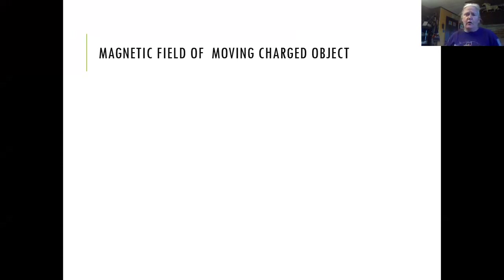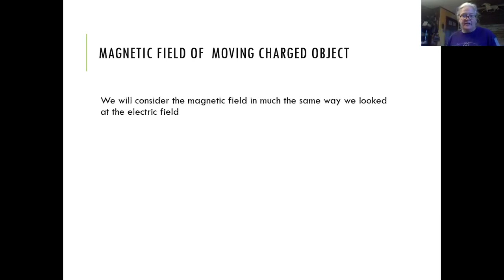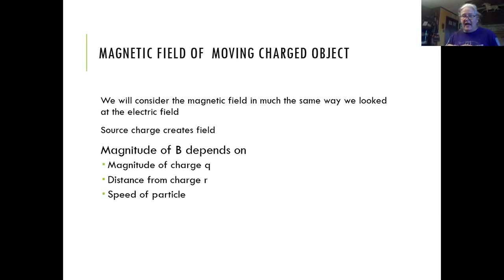We're not going to calculate for an individual moving charge, because that's actually fairly difficult — you have to do it in polar coordinates and consider that the radius is constantly changing. We just need to acknowledge that the field is there. So we have a source charge and a test charge, just like before. The source is the thing creating the field, and the test is the thing feeling the field.